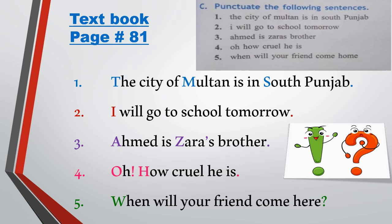The fourth sentence is: 'O! How cruel he is.' It shows emotion. We put the full stop at the end of the sentence. At the start, O is capitalized and we put an exclamation mark after O because it shows feelings. After that, H in 'How' will also be capital.